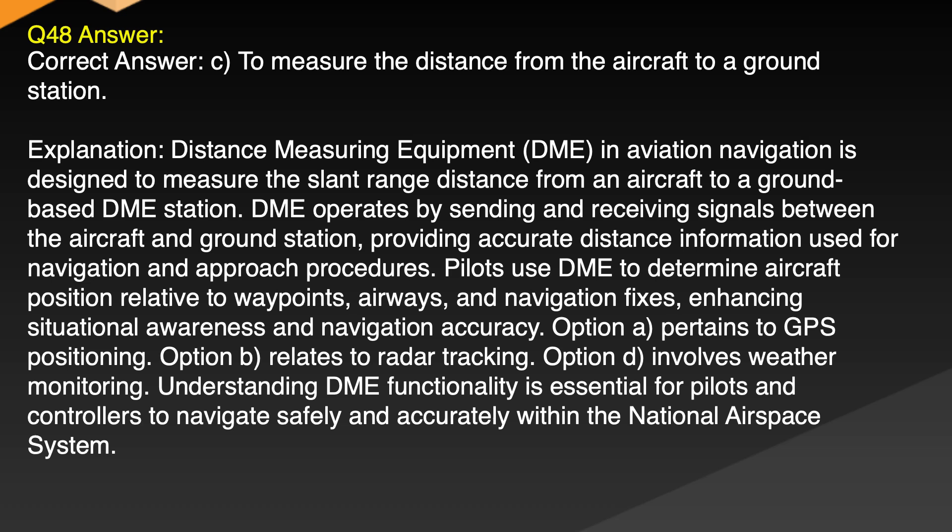Explanation: Distance Measuring Equipment in aviation navigation is designed to measure the slant range distance from an aircraft to a ground-based DME station. DME operates by sending and receiving signals between the aircraft and ground station, providing accurate distance information used for navigation and approach procedures. Pilots use DME to determine aircraft position relative to waypoints, airways and navigation fixes, enhancing situational awareness and navigation accuracy. Option A pertains to GPS positioning. Option B relates to radar tracking. Option D involves weather monitoring. Understanding DME functionality is essential for pilots and controllers to navigate safely and accurately within the national airspace system.